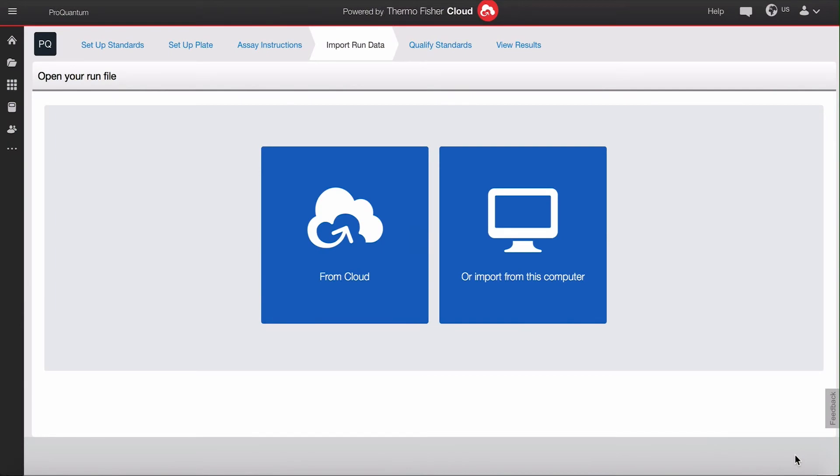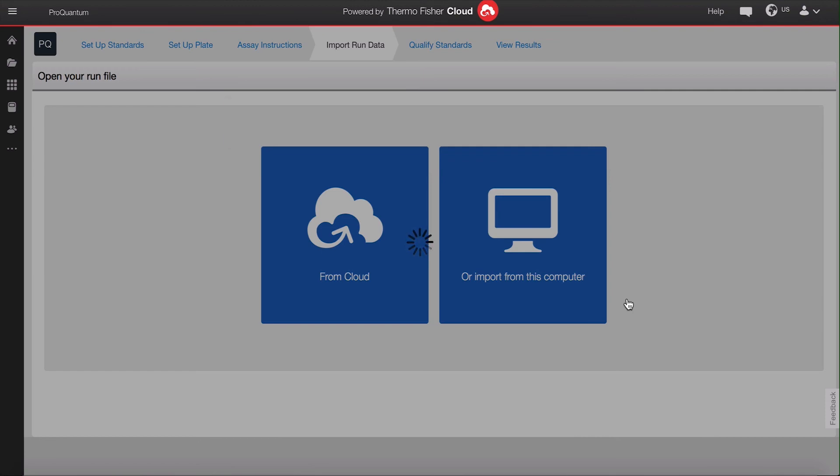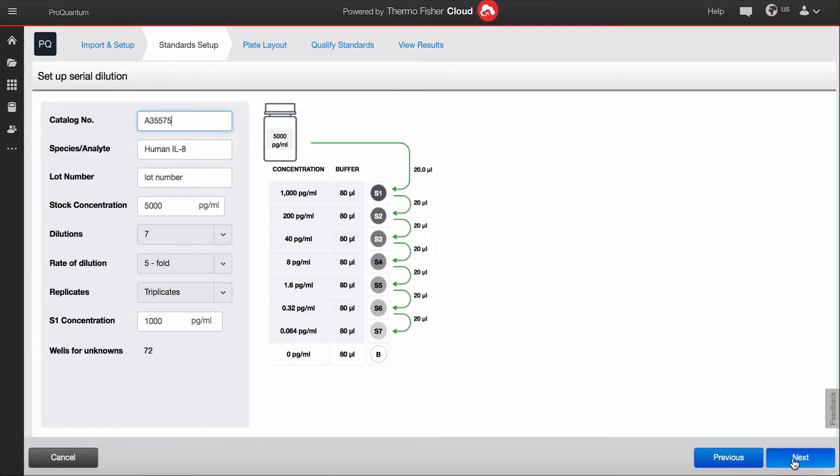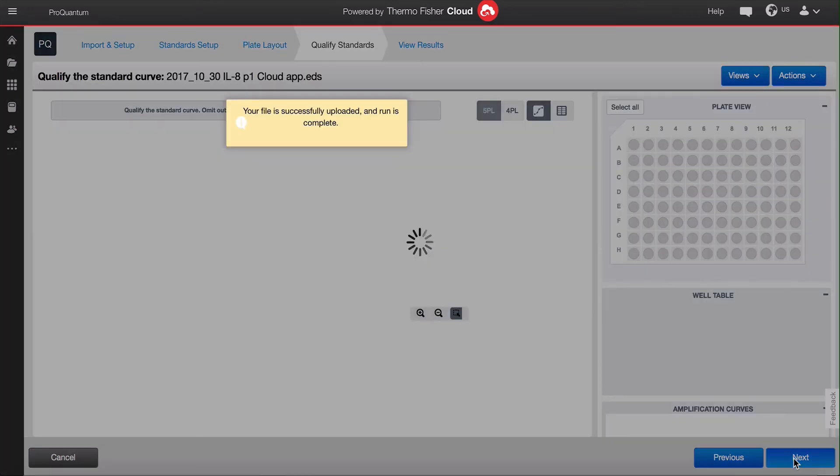When you return to the ProQuantum software, click on import the file from this computer. Apply the plate design that you previously saved. Verify that your standard curve and plate layout design did not change during the actual run at the lab bench. Now the software is applying the data to the specific plate layout and generating the curve fit.